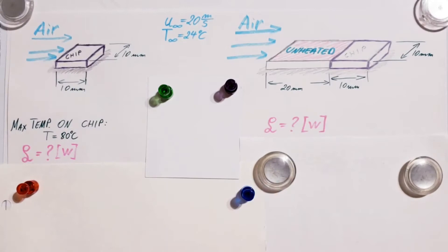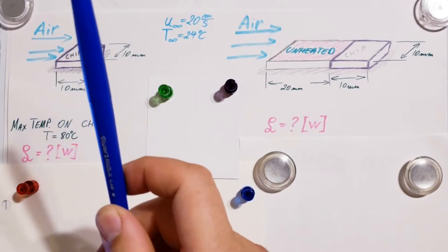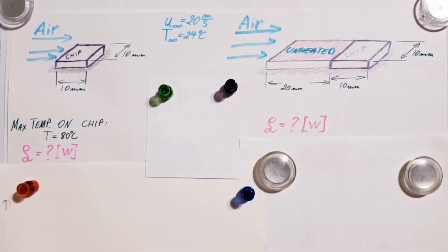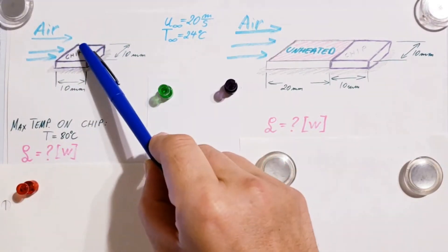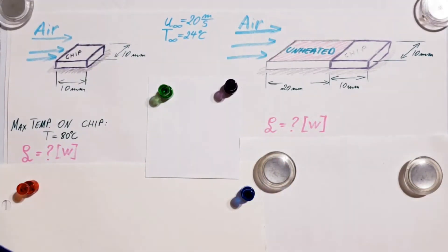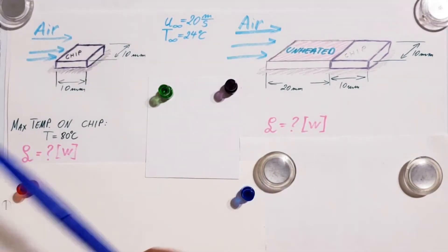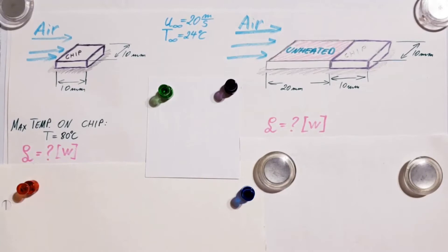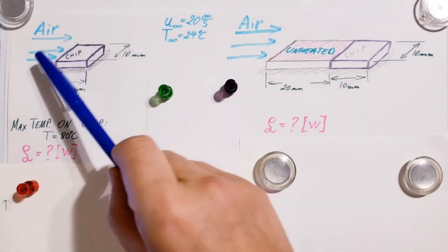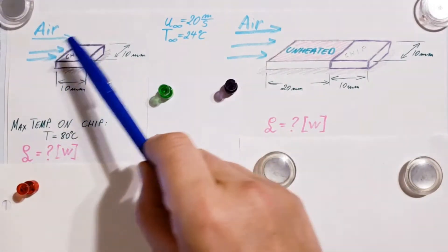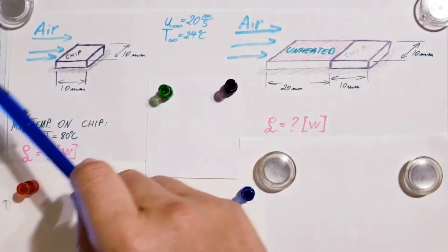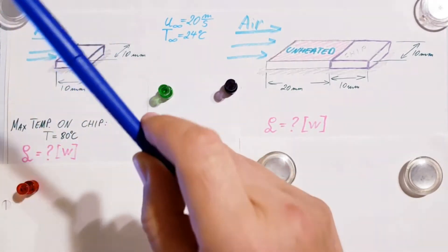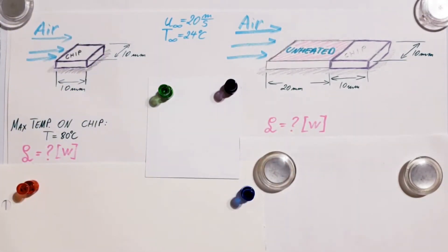It's important to remember: uniform heat flux. They also tell us that on the surface of this chip the temperature cannot exceed 80 degrees Celsius at any location — it doesn't matter what point, at the beginning, middle, or end — nowhere can it exceed 80 degrees Celsius.